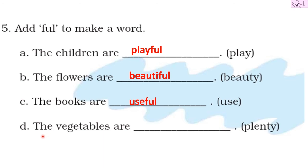Last is 'The vegetables are...' and we have the word 'plenty'. We will write plentiful. Here also, now we have an adjective which is describing the vegetables. The vegetables are plentiful.